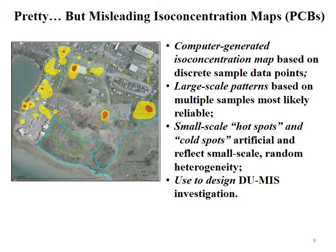This problem also affects isoconcentration maps. A map of a nine-acre site with hundreds of discrete PCB samples showing isolated hot spots is almost always an indication of small-scale heterogeneity within the soil. If you went back to the same points but moved them a few feet, you'd see a similar pattern, but the hot spots and cold spots would be in different places. These are artificial patterns that can be misused for trying to excavate individual hot spots. Large-scale patterns might be real and can help design a DU-MIS investigation, but small-scale hot spots and cold spots are not reliable.